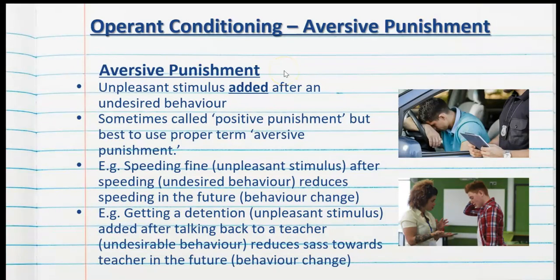There are two types of punishment. The first is aversive punishment, which is when an unpleasant stimulus is added after an undesired behavior. Sometimes this is called positive punishment, but it's better to use the proper term aversive punishment. A very good example is receiving a speeding fine — fines are unpleasant, and we receive them after the undesired behavior of speeding, which reduces the chance that we will speed in the future. Another good example is getting a detention after talking back to a teacher, with the goal of reducing that undesirable behavior in the future.